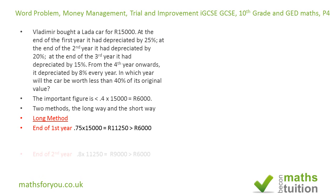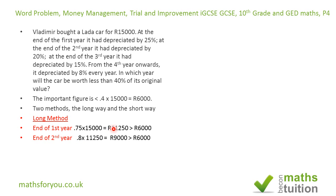At the end of the second year, because it's depreciated by 20%, it will be worth 0.8 of what it was worth at the end of the first year. So that's 0.8 times 11,250, which gives us 9,000 rubles. Nine thousand is greater than 6,000, so we move on to the third year.